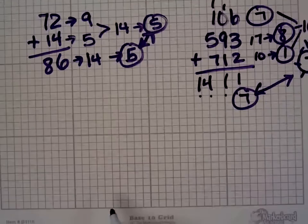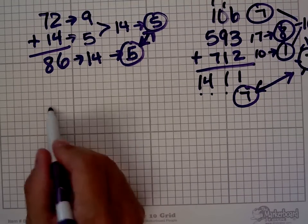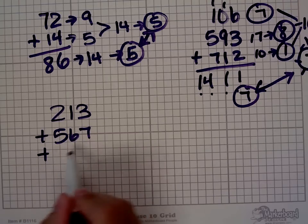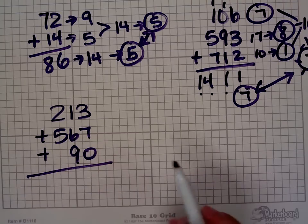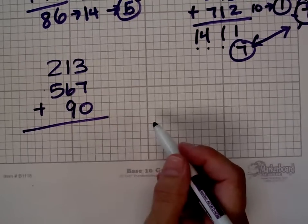Let's do one more example of using digital roots to check addition. 213 plus 567 plus 90.